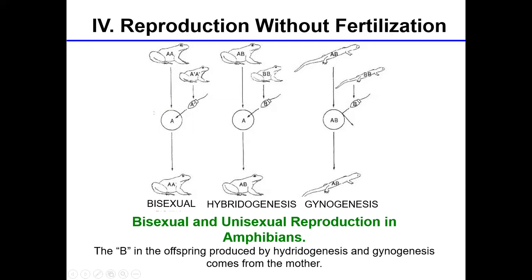Gynogenesis has a very different mode of operation. It still yields all-female offspring, but it's the consistent production of female offspring where diploid and triploid eggs are only activated by sperm — no chromosomes are incorporated into the embryo. The male sperm activates the egg deposited by the female but is never incorporated into the developing embryo. Whereas in hybridogenesis the male contribution is incorporated and later purged, gynogenesis only activates cellular differentiation. All chromosomal content comes specifically from the female, so these are 100% clonal matches of the female.